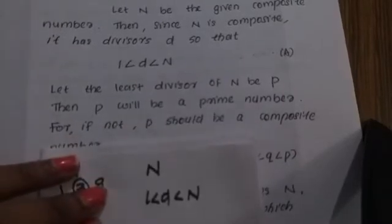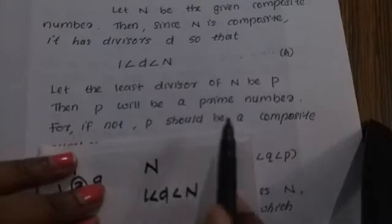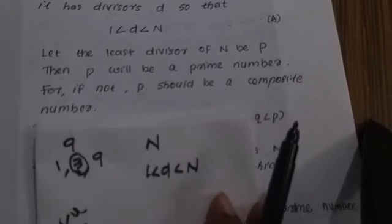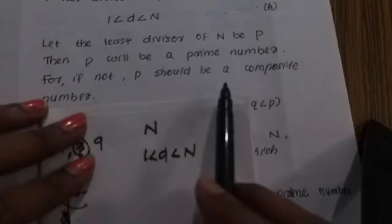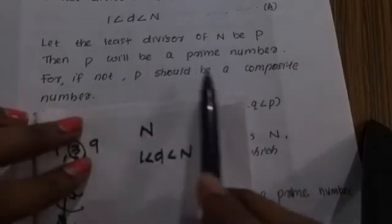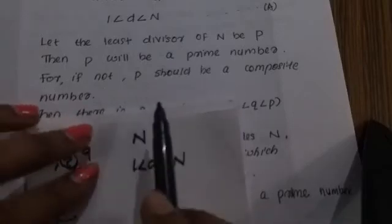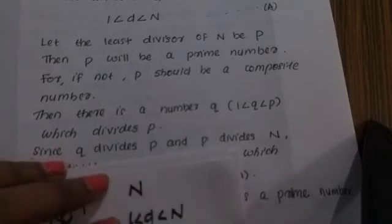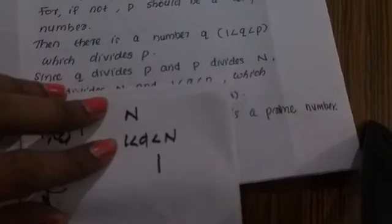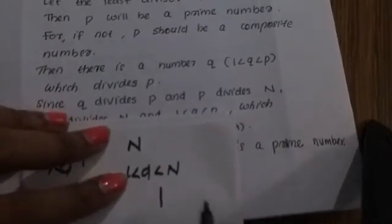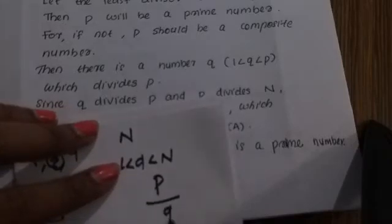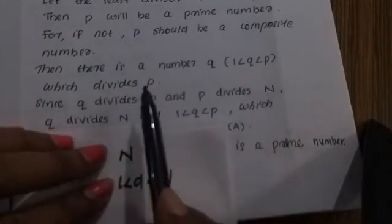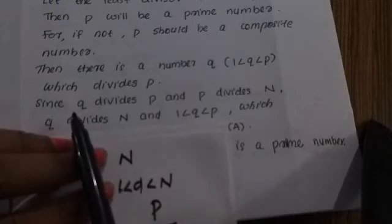The least divisor p will be a prime number. If not, p should be a composite number. If p is composite, then there is a number q which divides p, so q is also a divisor of n.